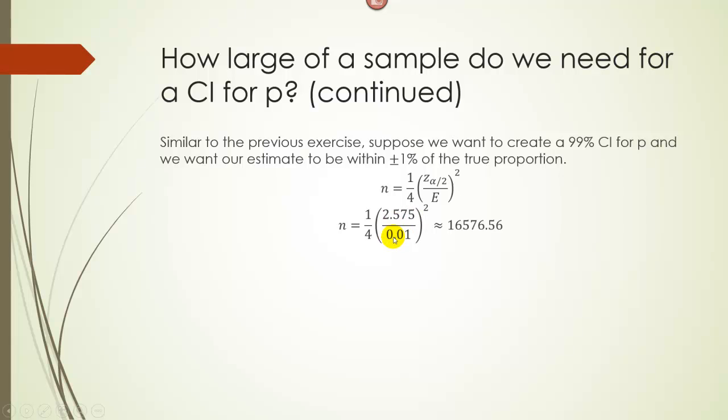So do 2.575 divided by 0.01. And remember, whenever you plug in percentages into formulas, you have to convert them to decimals first. So do that, then square it, then multiply that final result by one-fourth, or you could just divide it by four either way, and I'm going to get 16,576.